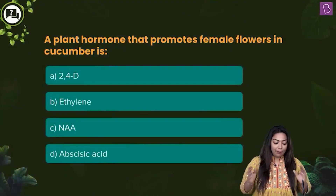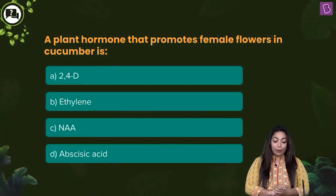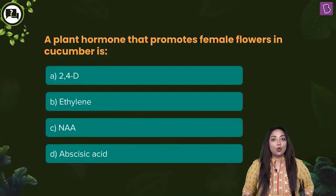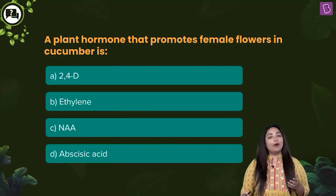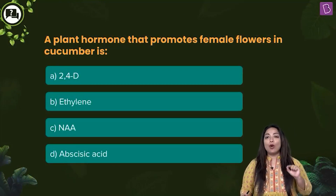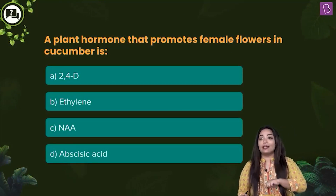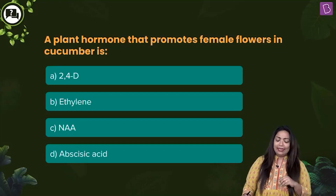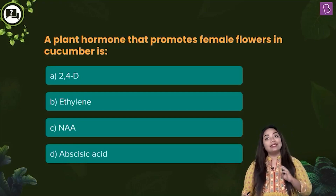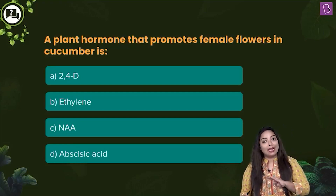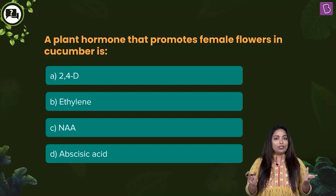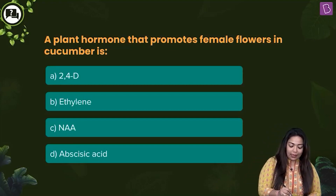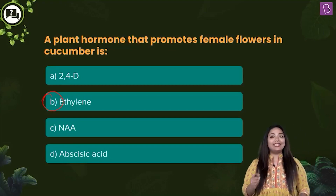Let's take a look at this one: a plant hormone that promotes female flowers in cucumber. This is a very important question. Is it A) 2,4-D, a type of auxin used as a weedicide? B) Ethylene? C) NAA, that is naphthalene acetic acid? Or D) Abscisic acid? The answer is option B, Ethylene.